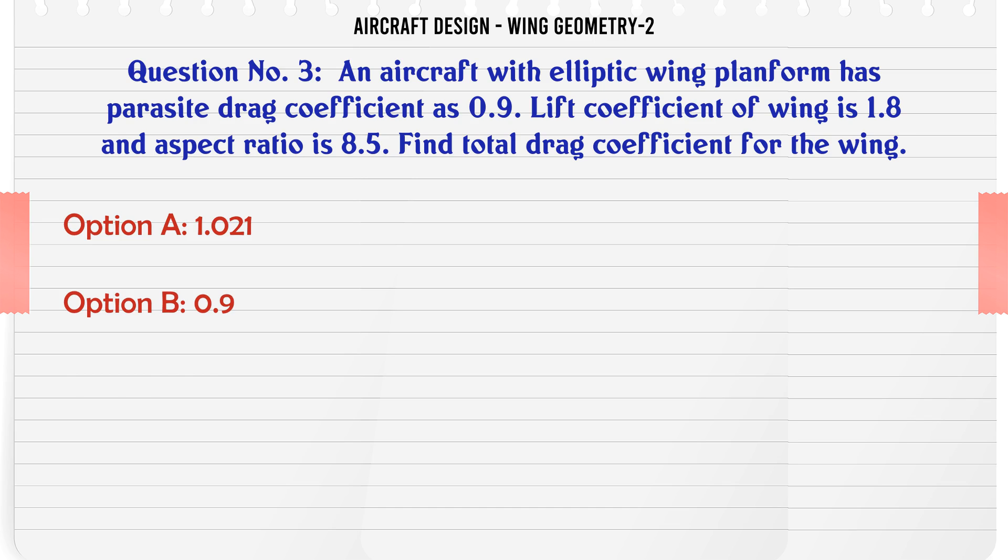Parasite drag coefficient as 0.9. Lift coefficient of wing is 1.8 and aspect ratio is 8.5. Find total drag coefficient for the wing.